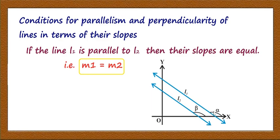Therefore, tan alpha = tan beta, meaning the slope of the first line equals the slope of the second line. The result to remember is: if lines l1 and l2 are parallel, then their slopes are equal, that is m1 = m2.